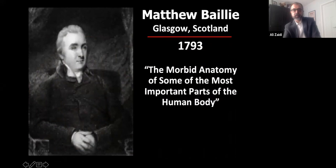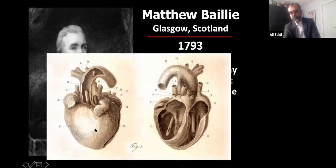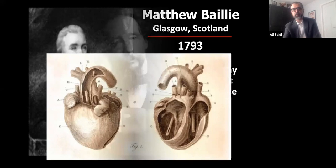In the 1700s, Matthew Bailey wrote about the morbid anatomy of some of the most important parts of the human body. In this book he describes a transposition — where the aorta was coming out of the right ventricle and the pulmonary artery out of the left ventricle — what is now called transposition of the great vessels, documented in the 1700s.